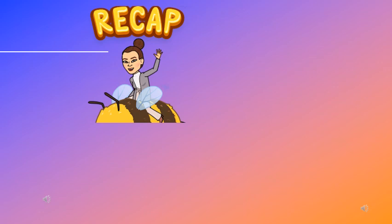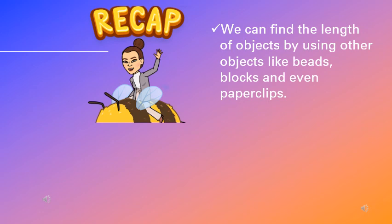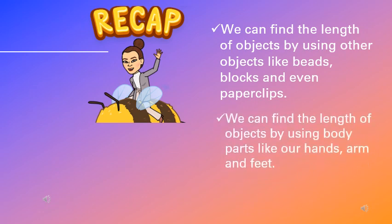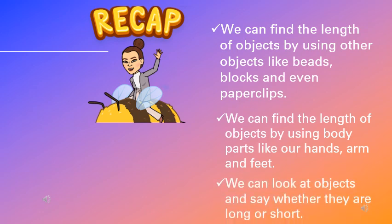Okay, boys and girls, let's recap. We have learned that we can find the length of objects by using other objects, like beads, blocks and paper clips. We can also find the length of objects by using body parts, like our hands, our arms, our feet, and even our toes. And lastly, we can look at objects and say whether they are long or they are short, because that's describing their length too.